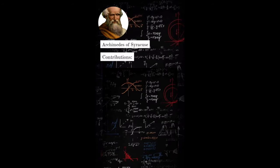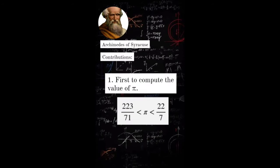Here are some of his contributions. First to compute the value of Pi. According to him, Pi lies between 223 over 71 and 22 over 7.